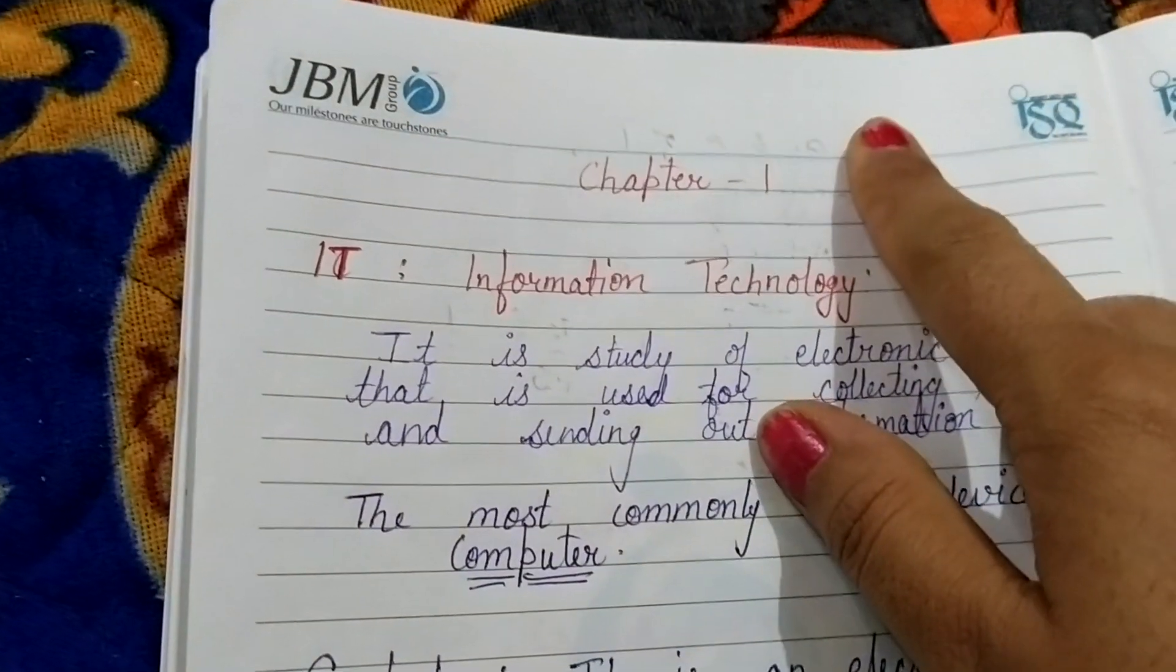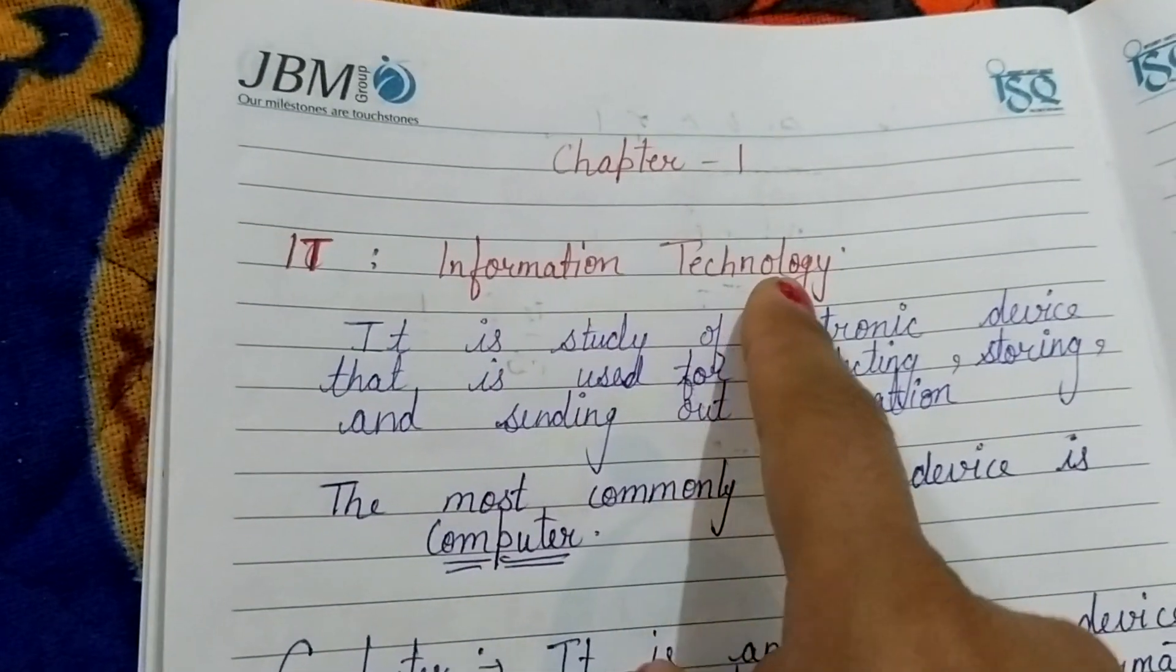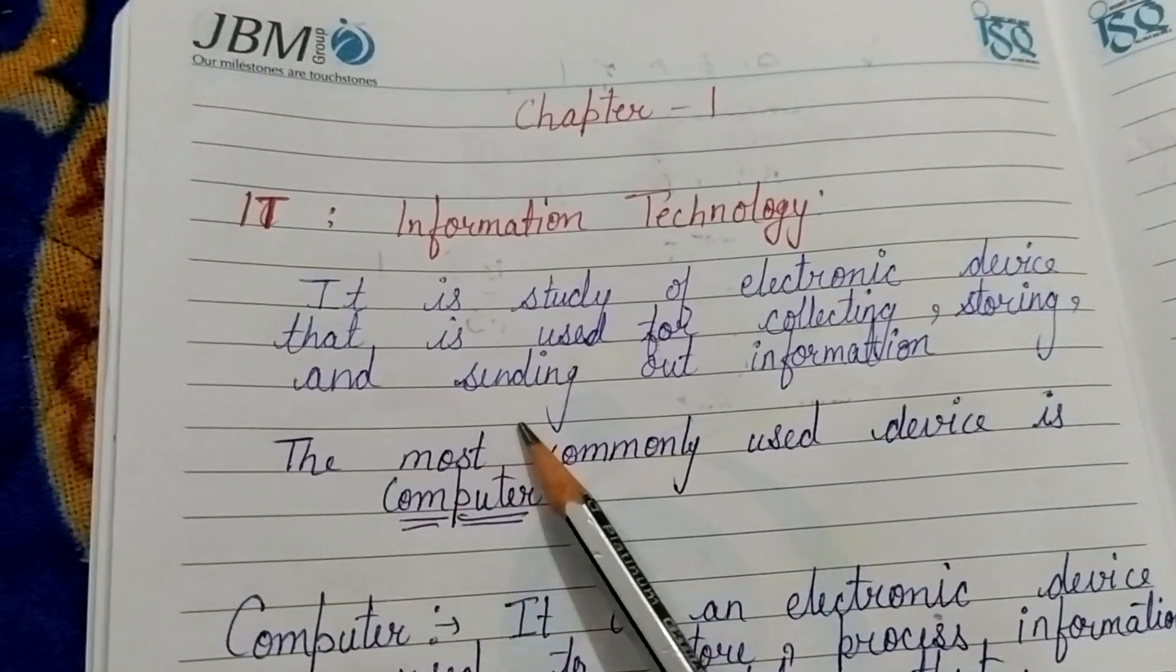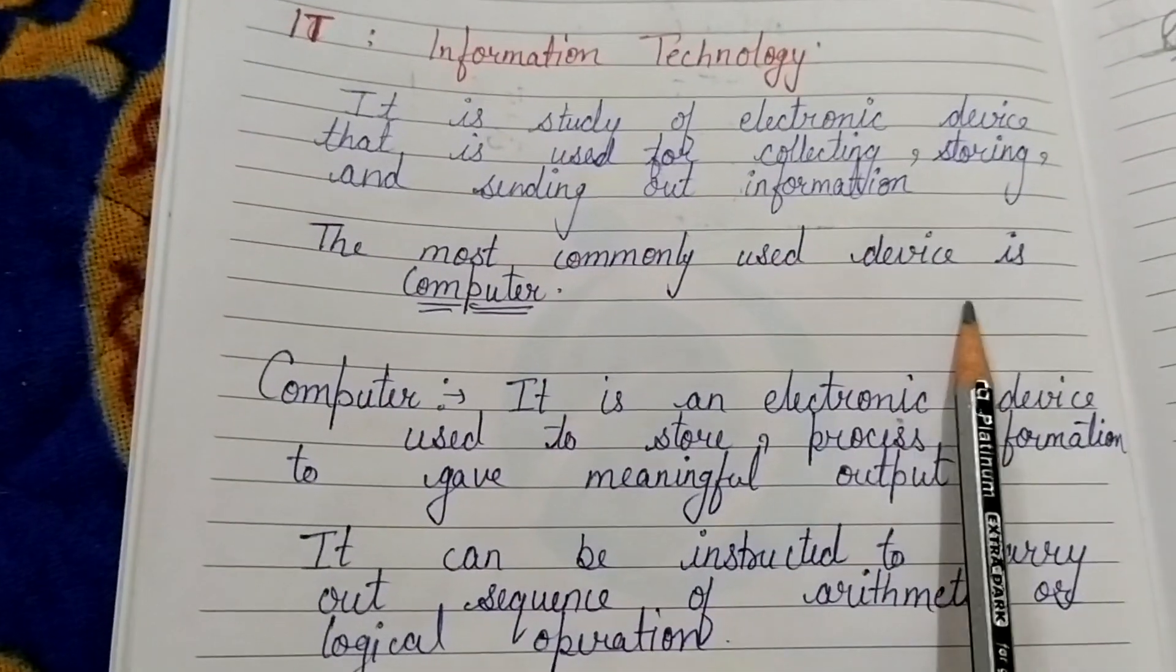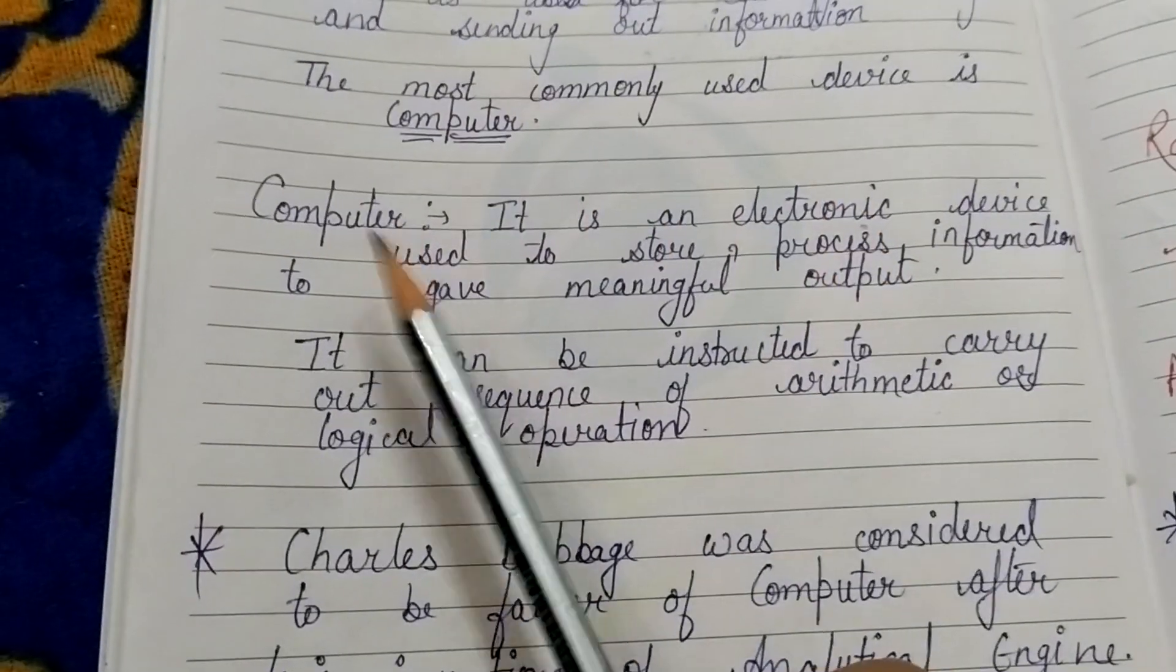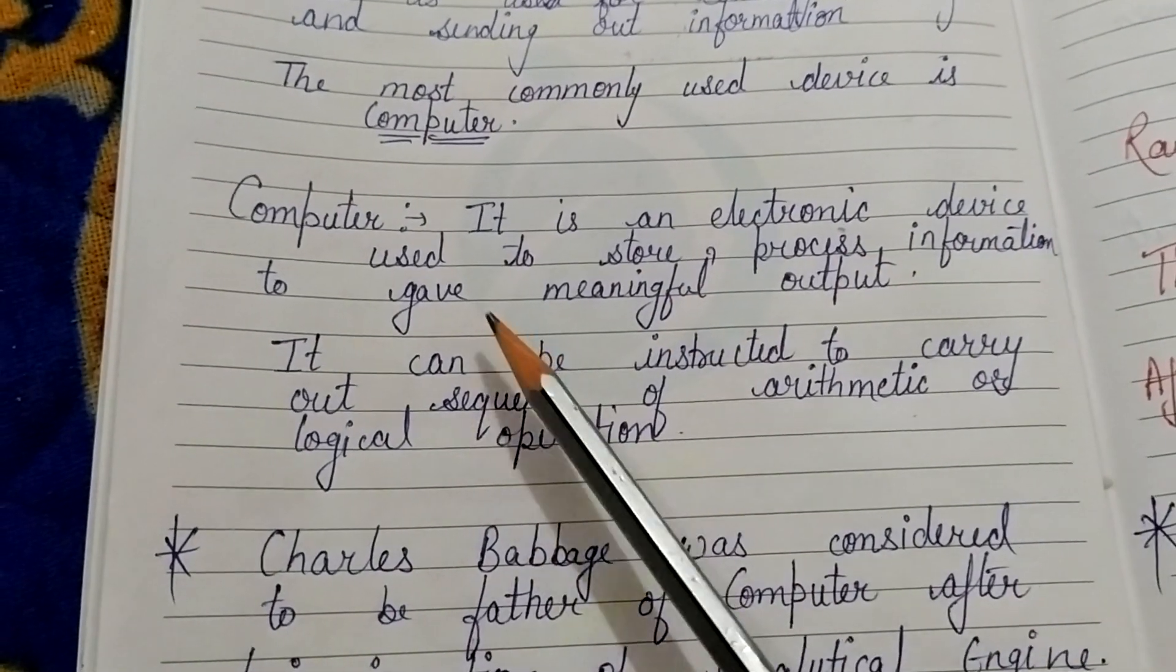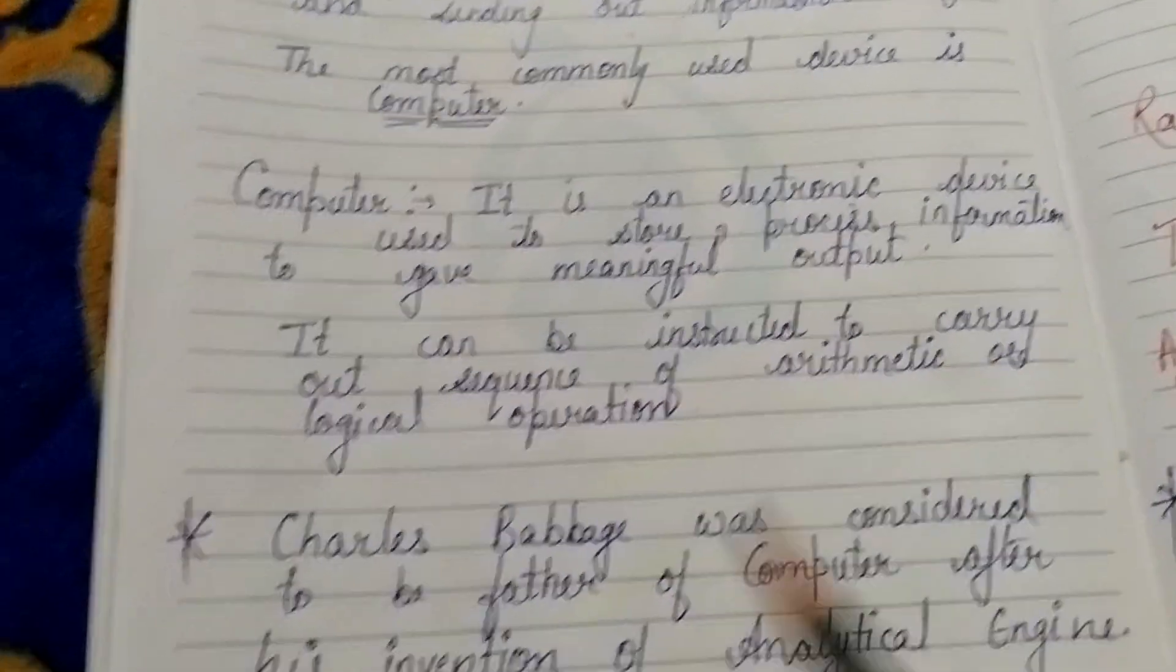We will continue from the start. Our first chapter is Information Technology. We will first define Information Technology: it is a study of electronic devices that are used for collecting, storing, and sending out information. Then, the most commonly used electronic device is computer. Then we will define computer: Computer is an electronic device used to store and process information to give meaningful output.